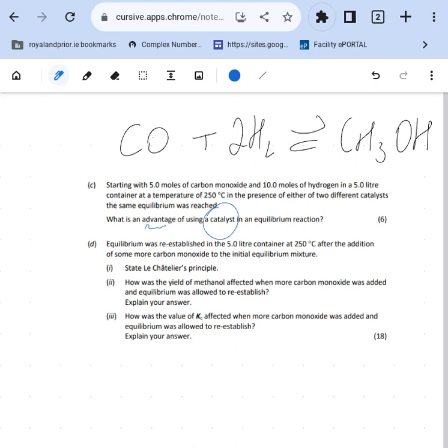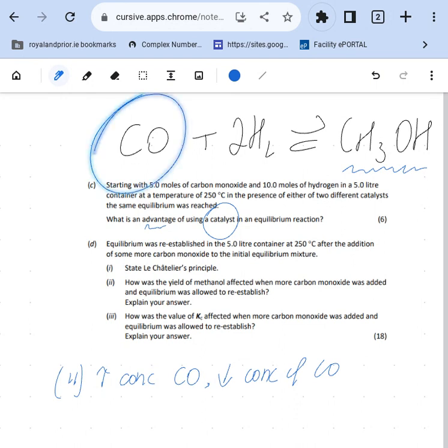This one: how is the yield of methanol, which is this thing, my alcohol, affected when more carbon monoxide was added? So when I add more carbon monoxide, I'll write this out roughly - we increase the concentration of carbon monoxide and we're applying Le Chatelier's principle. The system responds in such a way as to decrease the concentration of carbon monoxide.